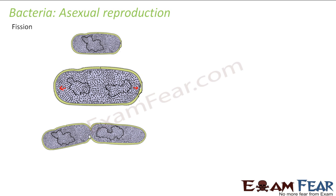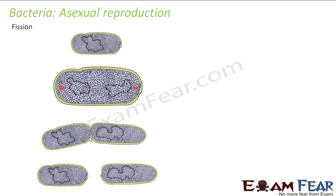Since the two chromosomes have moved far from each other, a wall-like structure is formed between them, and then it finally divides into two. We started with one parent organism and this resulted in two daughter organisms. Once fission happens, the parent ceases to exist because it itself splits into two. This is known as binary fission — binary because two daughter organisms are produced. This is how bacteria reproduce asexually by fission.